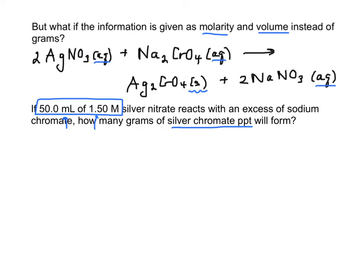So moles is going to be 1.5 molar. Remember, we've got to be liters, so 0.05 liters. And that's going to come out to be 0.0750 moles of your silver nitrate.